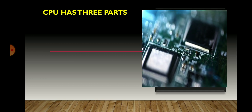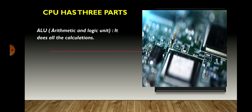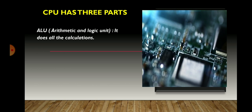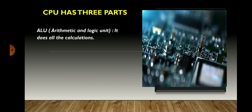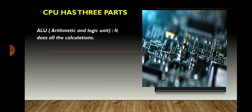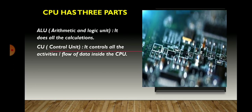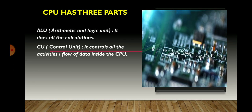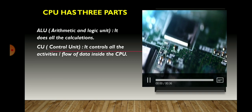The first part is ALU, which stands for Arithmetic Logic Unit. It does all the calculations that take place inside the CPU. Next is CU, which stands for Control Unit. It controls all the activities of the computer and tells the other parts of the computer what they should do.